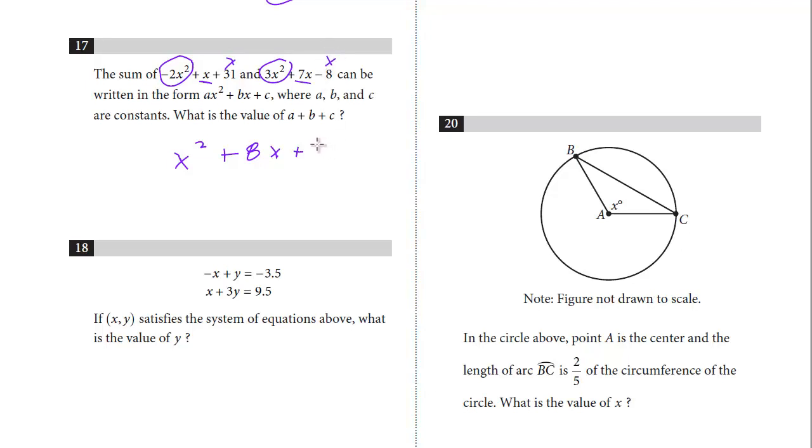We have 31, and then we have minus 8, so we have positive 23. They're just asking for A plus B plus C. The A for this X squared is just 1. 8 is the coefficient here, so that's 8. And then this is just the whole number, it's 23. We just add them up, 23 plus 9. The answer is 32.